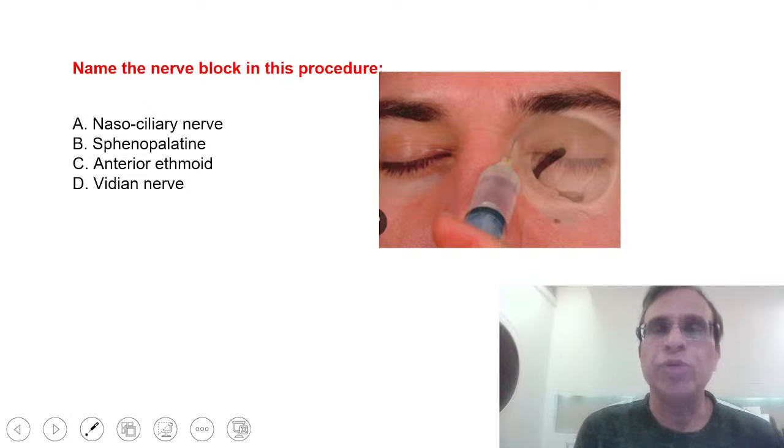This is an image-based question. You can see on the face between the eye and the nose near the canthus of the eyeball, they are injecting something to block a nerve. Which nerve is blocked in this procedure? The choices were nasociliary nerve, sphenopalatine nerve, anterior ethmoid, and vidian nerve.